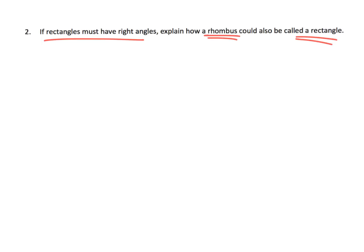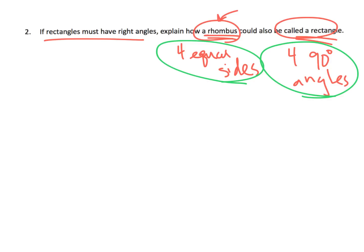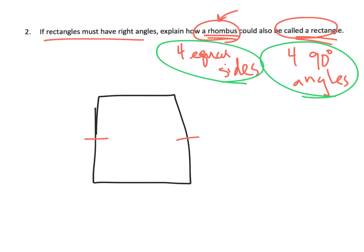If rectangles must have right angles, how can a rhombus also be a rectangle? A rhombus has four equal sides, and a rectangle has four 90-degree angles. What we need is a figure with four equal sides and four 90-degree angles — that's going to look like a square. All four sides are equal and we've got four right angles: that's a square.